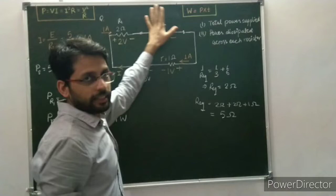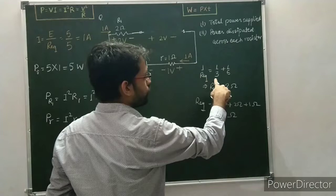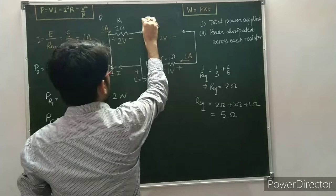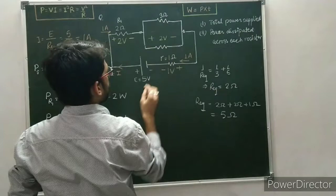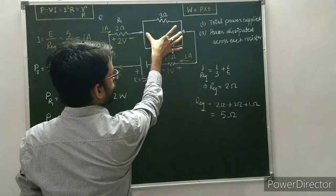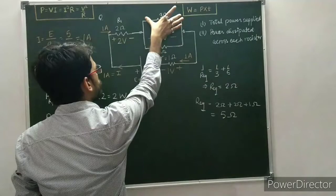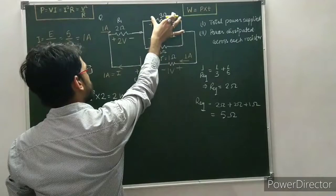Now resuming the original circuit — we remove the 2 ohm equivalent and restore the two resistors connected in parallel, which are 3 ohm and 6 ohm. The potential difference across this parallel combination is 2 volt. Since they are connected in parallel, this 2 volt appears across both the 3 ohm and the 6 ohm resistors.